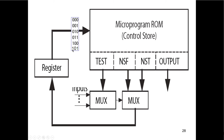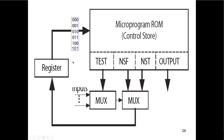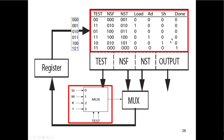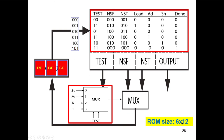So we have six states — zero through five — and this is what we put in: next-state-false, next-state-true, and the test. The tests are going to be zero, three, or one — we don't have a two. Those are the outputs: load, add, shift, and done. We need three external flip-flops to hold the state result. So our ROM is 6×12.